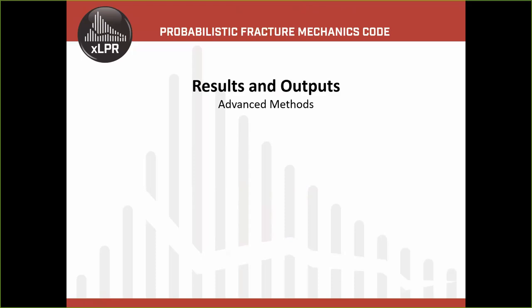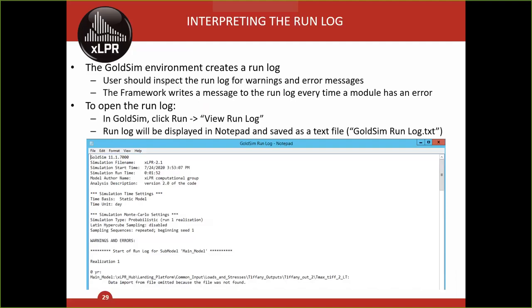The next set of topics is focused on results and outputs and advanced methods related to those. After each run, GoldSIM creates a run log. The user should inspect the run log for warnings and error messages — some warnings are printed when a module is activated. If any errors are reported, the user should look at the run log for more information. After a run is completed, GoldSIM asks the user if they want to view the run log. Another way to view it is to go to Run in the menu bar and select View Run Log. It is also saved in the same directory as the GoldSIM file, named goldsimrunlog.txt.